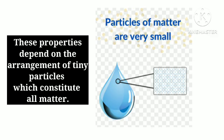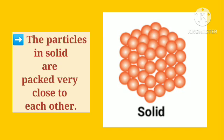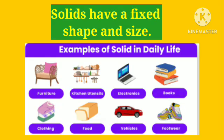Now let us see how the arrangement of tiny particles influences the properties of a substance. First is solids. In solids, the particles are packed very close to each other. Therefore, they have a fixed shape and size.